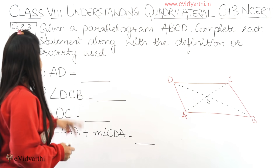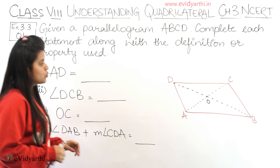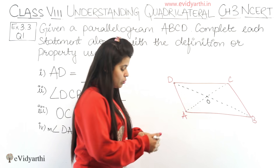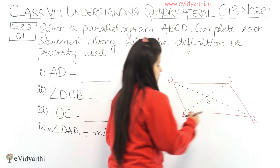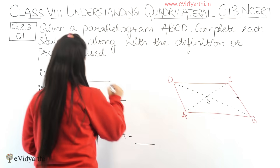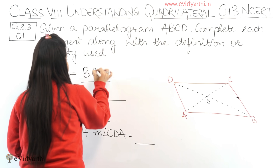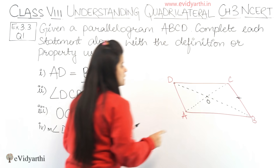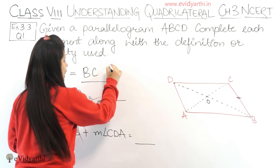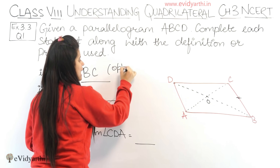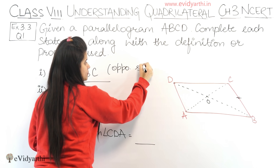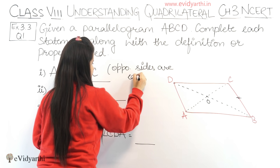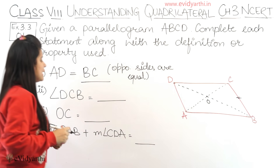The first one is AD equals to — AD means this side — and this is equal to BC. The property used here is that in a parallelogram, opposite sides are equal.